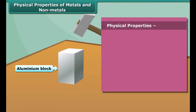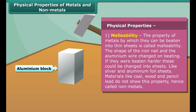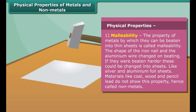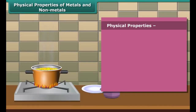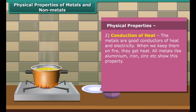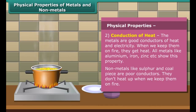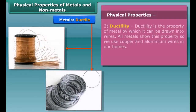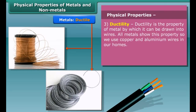Properties: First, let's know about the physical properties. The first property of metal is its malleability — by this property, metals can be beaten into thin sheets; non-metals don't show this property. The next property is conduction of heat: metals are good conductors of heat and electricity, while non-metals are poor conductors. The property of metal by which it can be drawn into wires is called ductility; non-metals don't show ductility.